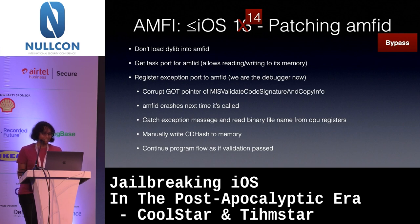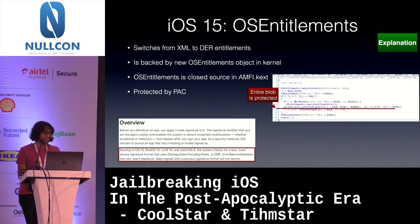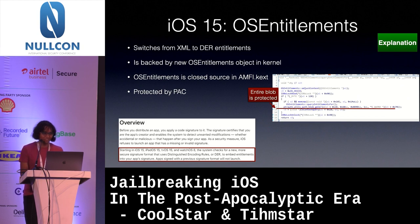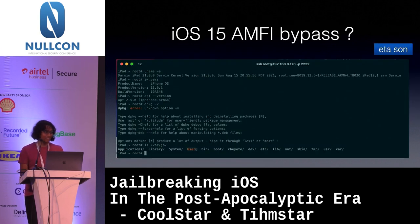So now we can patch AMFId up to iOS 14. In iOS 15, they added OS entitlements, switching from the XML dictionary to DER entitlements. DER is backed by a new OS entitlements object in the kernel which is in closed-source AMFI text and is protected by PAC. The entire blob is hashed, so you can't really change anything in it. So iOS 15 AMFI bypass is coming soon — you can see we have SSH running here already.